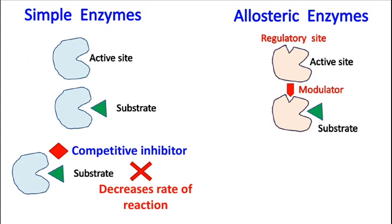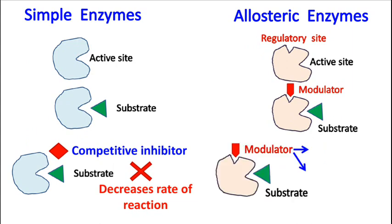In case of simple enzymes, the rate of reaction decreases in the presence of a competitive inhibitor, while in case of allosteric enzymes, the modulator may increase or decrease the rate of reaction.